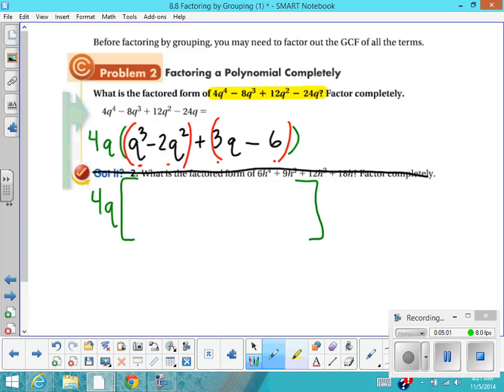My GCF between q³ and 2q² is q². And that is times the quantity of q - 2.